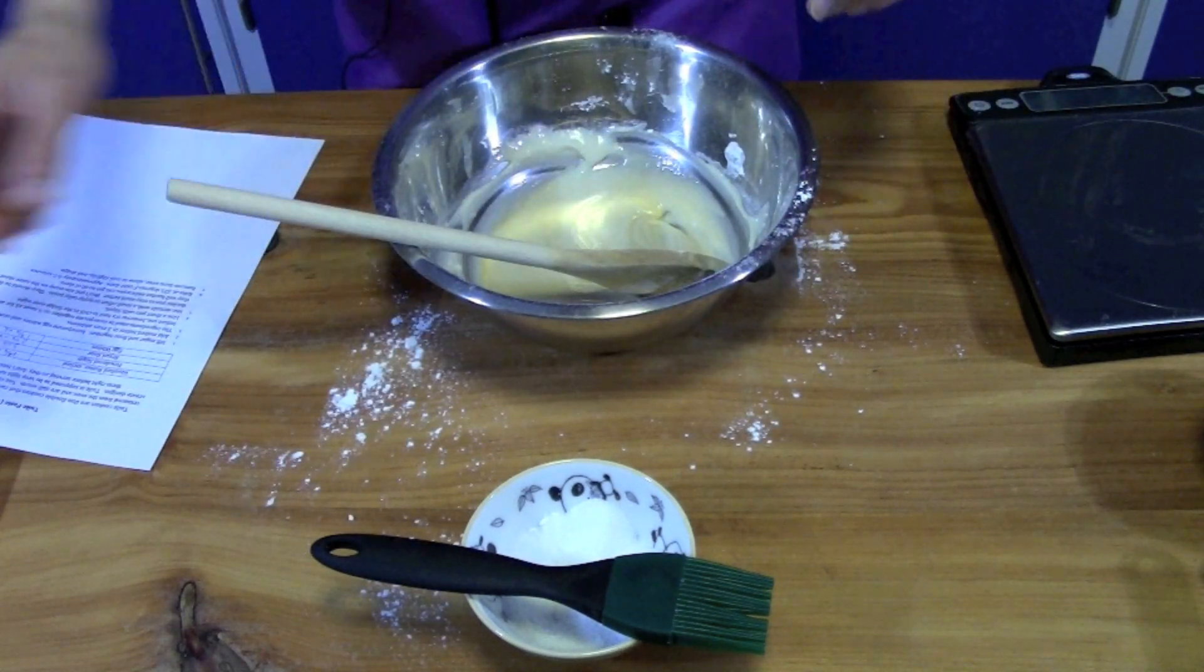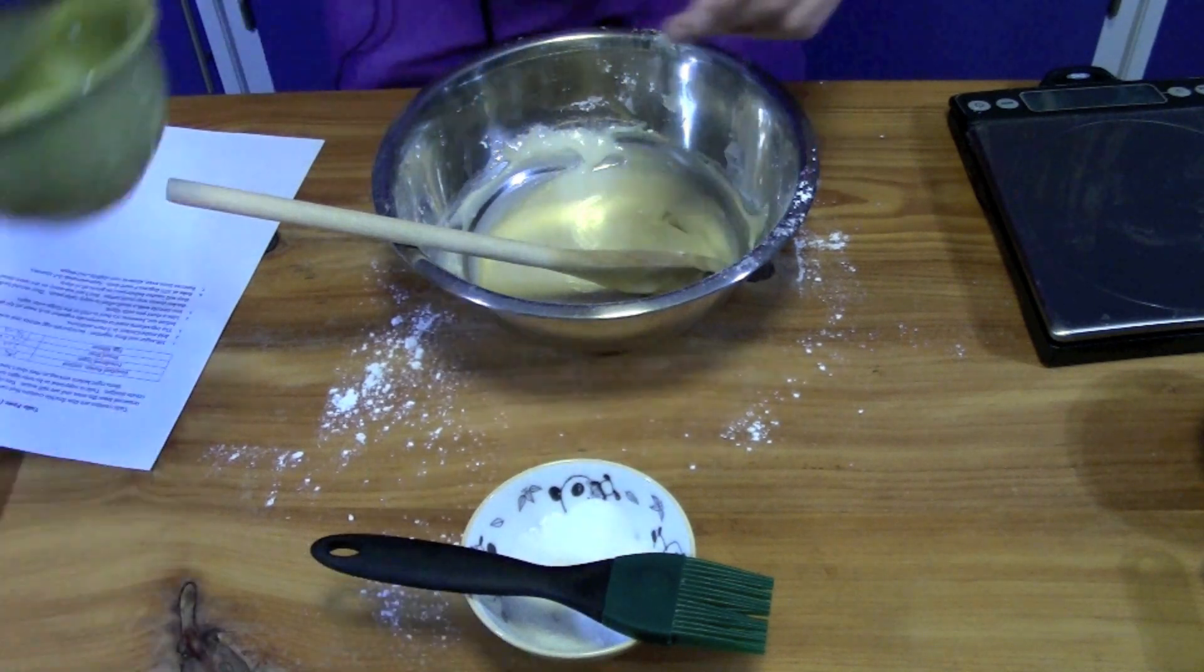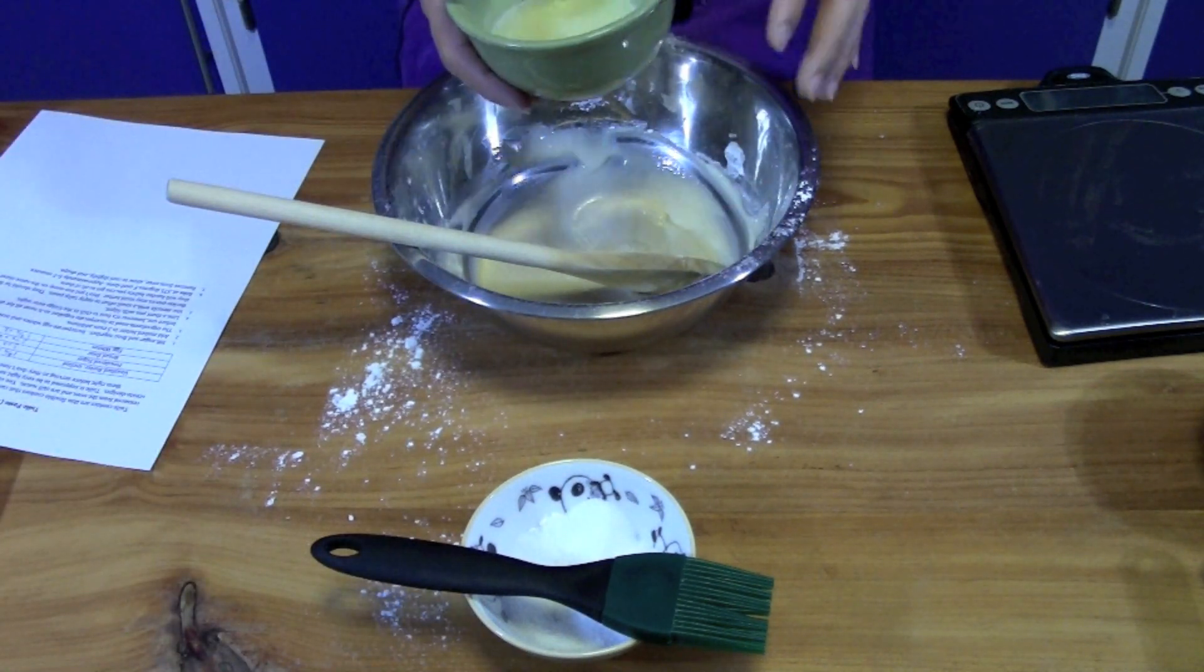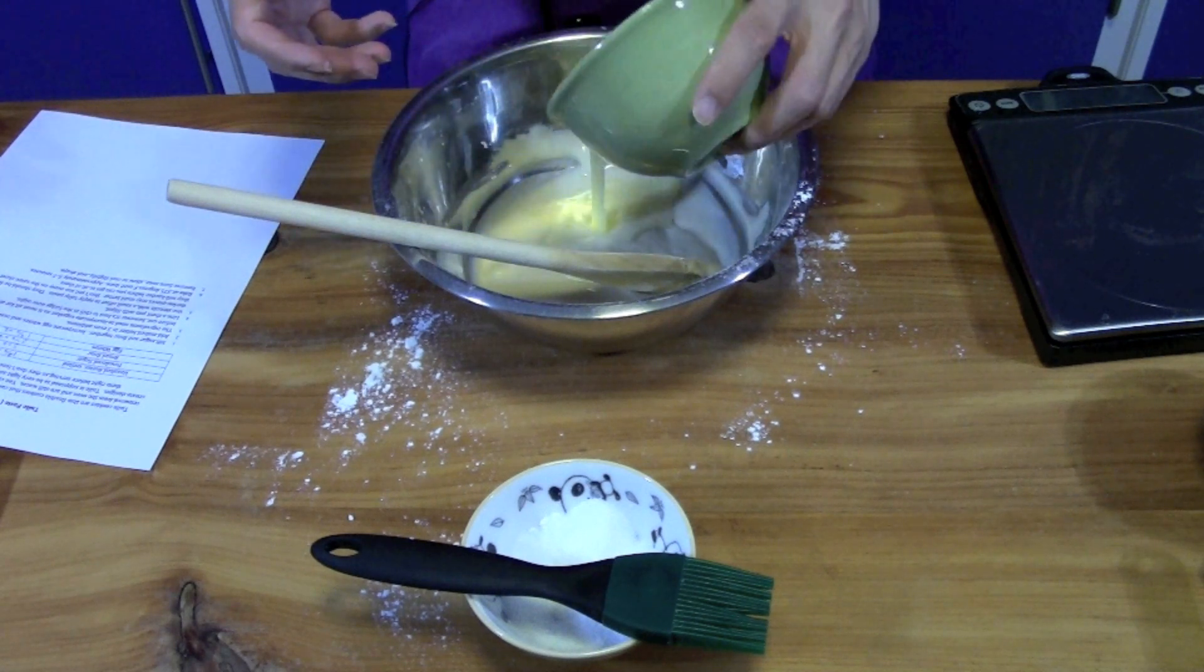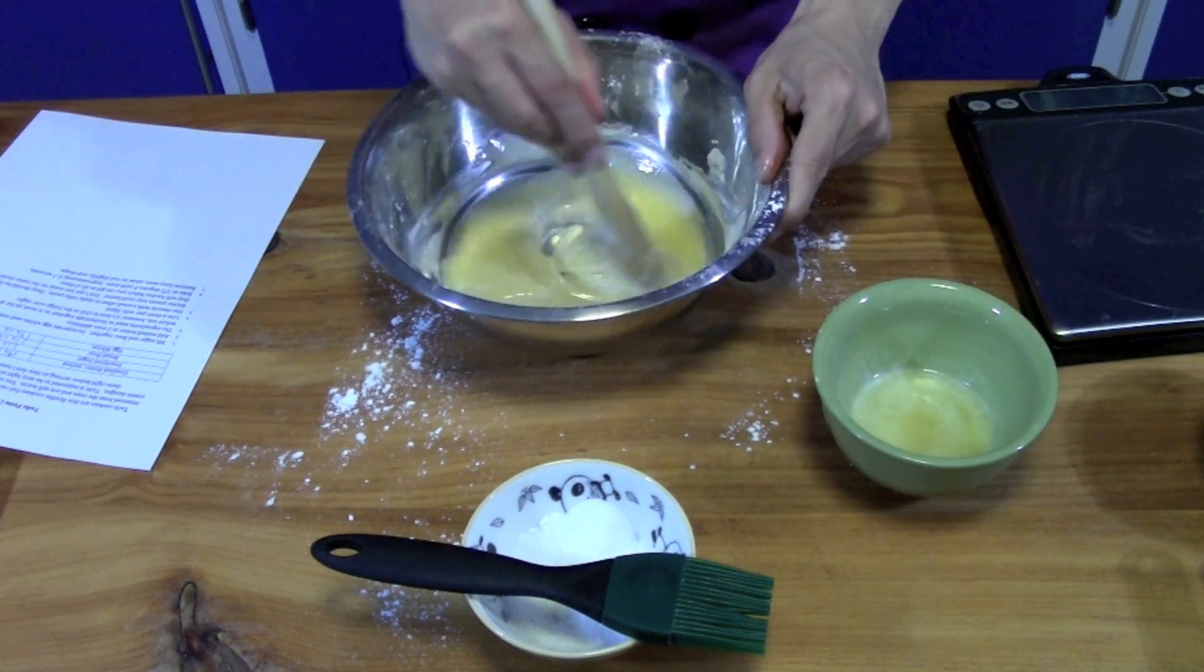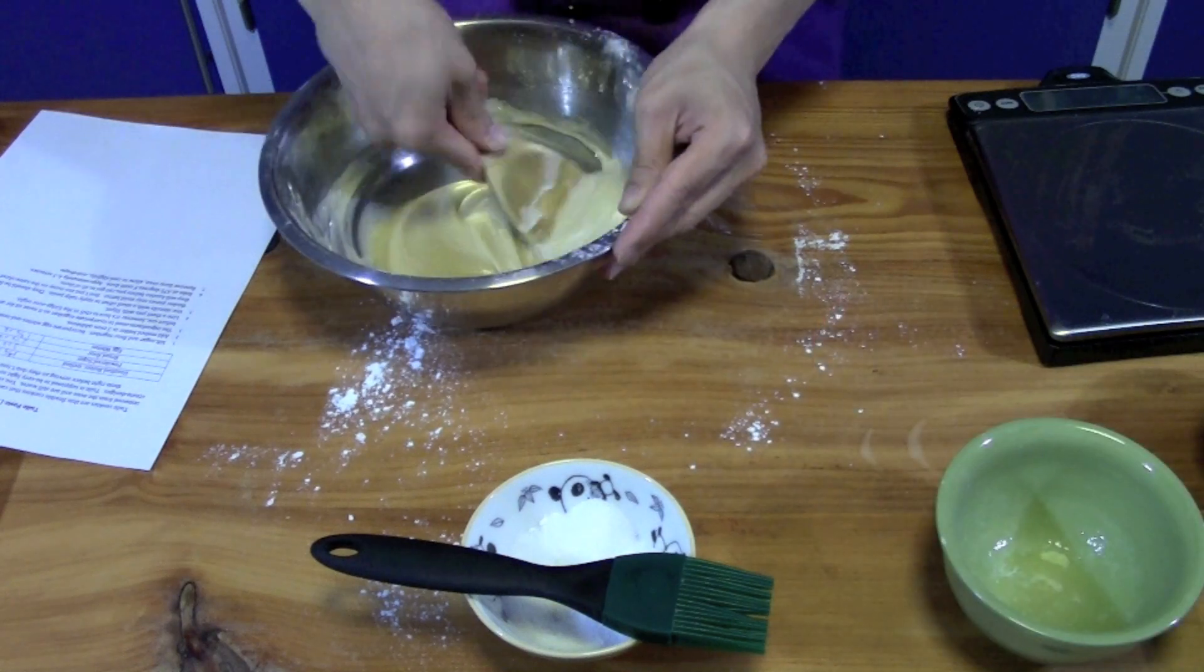Then we're going to incorporate one and three quarters ounces of unsalted butter, which is about three and a half tablespoons. And we're going to do this in like three additions. And that's pretty much it.